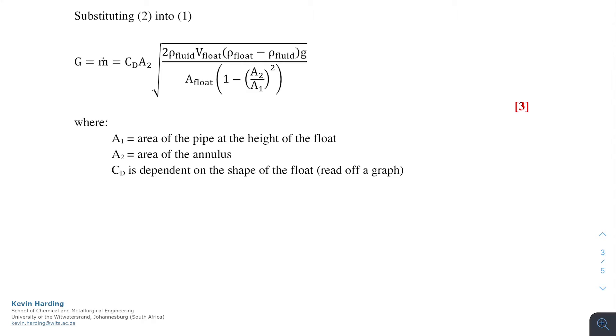After substituting equation 2 into equation 1, we are left with equation 3, where you can see the change in pressure term has been moved into the top, and we have the A float terms, V float terms. This is all now in terms of rotameter nomenclature.